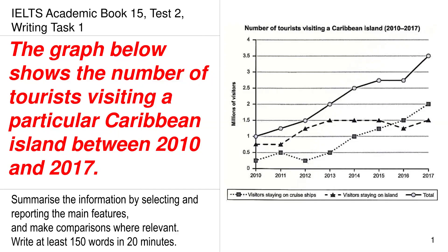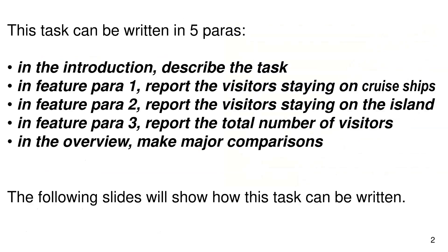Today we are going to be discussing the Cambridge IELTS Academic Book 15 Test 2, Writing Task 1. The graph below shows the number of tourists visiting a particular Caribbean island between 2010 and 2017. This task can be written in five paragraphs: in the introduction, describe the task; in Feature Para 1, report the visitors staying on cruise ships; in Feature Para 2, report the visitors staying on the island; in Feature Para 3, report the total number of visitors; and in the overview, make major comparisons.